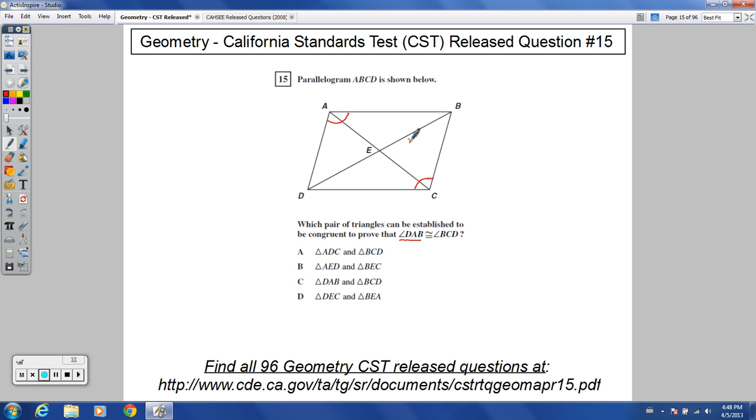So to me it looks like it would be nice if I could prove that this triangle right here was congruent to this triangle right here. So that's the two I'm trying to prove congruent.